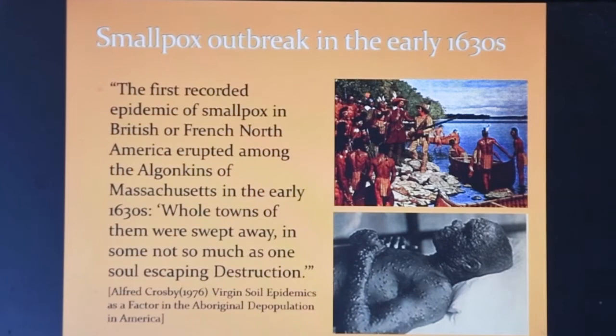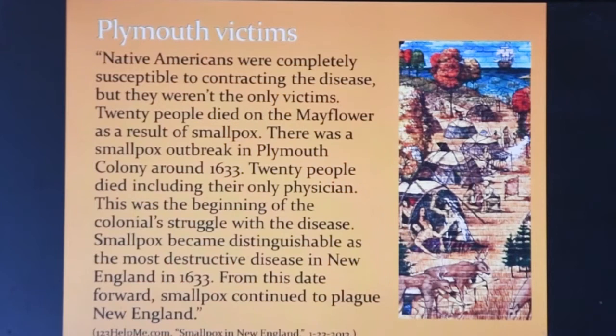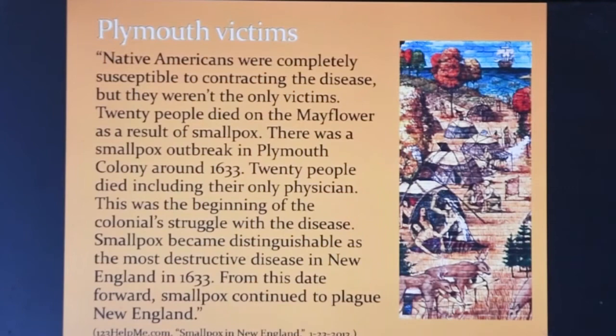Alfred Crosby, in his virgin soil theory of the 1970s, noted that smallpox epidemics among the Algonquins in 1630 wiped out entire native settlements. While the native population was completely susceptible to contracting these diseases because they had no acquired immunity, even 20 of the English separatists aboard the Mayflower died as a result of smallpox. A subsequent outbreak in 1633 killed another 20 English people and thousands of native people.